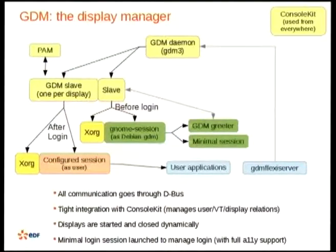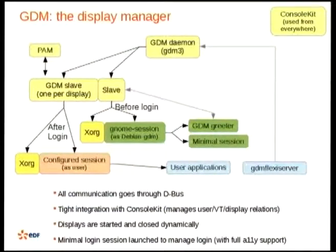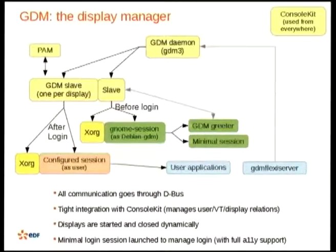The greeter contains the actual user interaction. It talks with the slave, and the slave talks to PAM. Once you log in, the minimal session is killed and you get a new X server on the configured session. You can talk from your session to the GDM daemon through a DBUS interface, which can spawn another slave on another display — everything is dynamic. ConsoleKit is used everywhere inside GDM because it is the daemon that knows where the slaves and displays are and who is logged in where.